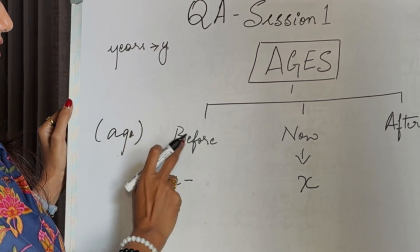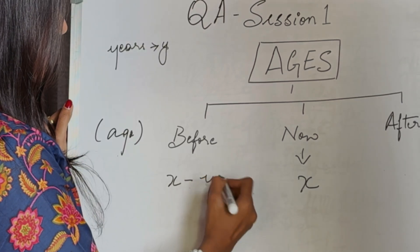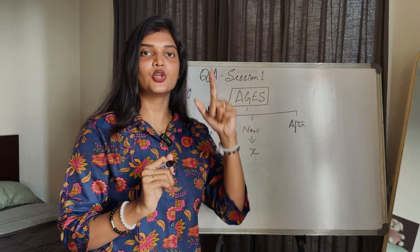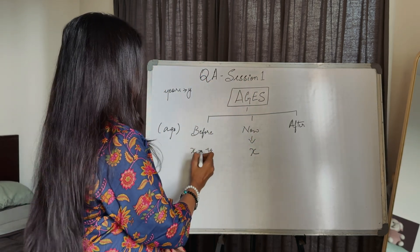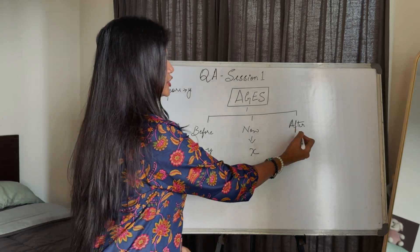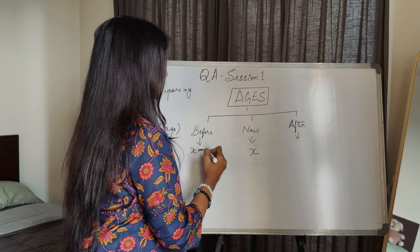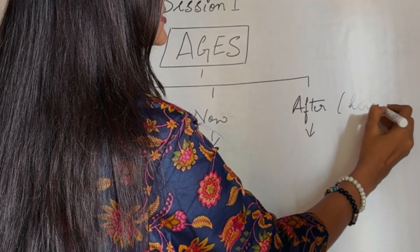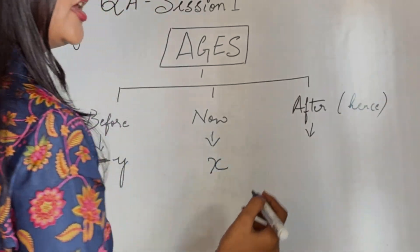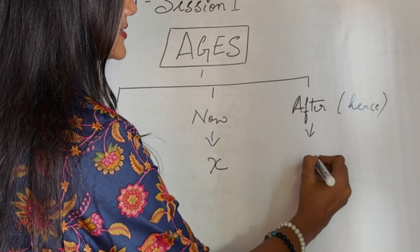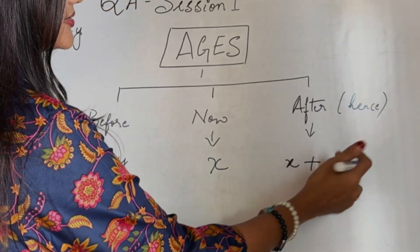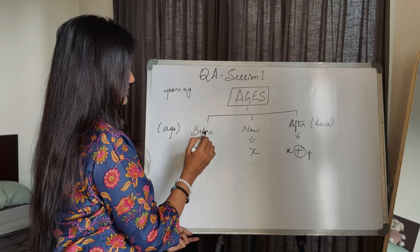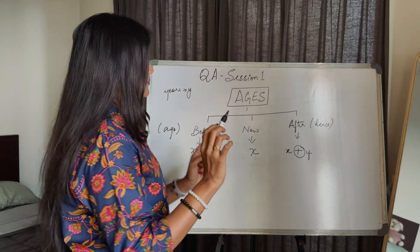If it's before or ago, you can keep it as X minus some years. For after or hence, you can keep it as X plus some years. So after means plus sign, before means minus sign. This is the first concept.